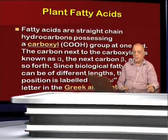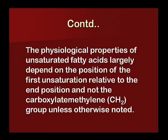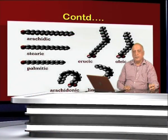Fatty acids are straight-chain hydrocarbons possessing a carboxyl group at one end. The carbon next to the carboxylate is known as alpha, the next carbon is beta, and so forth. Since biological fatty acids can be of different lengths, the last position is labeled omega, the last letter in the Greek alphabet. The physiological properties of unsaturated fatty acids largely depend on the position of the first unsaturation relative to the end position. Some structural models include orchidic, stearic, erucic, oleic, palmitic, linolenic, and linoleic acid, which are present in various oilseed crops.